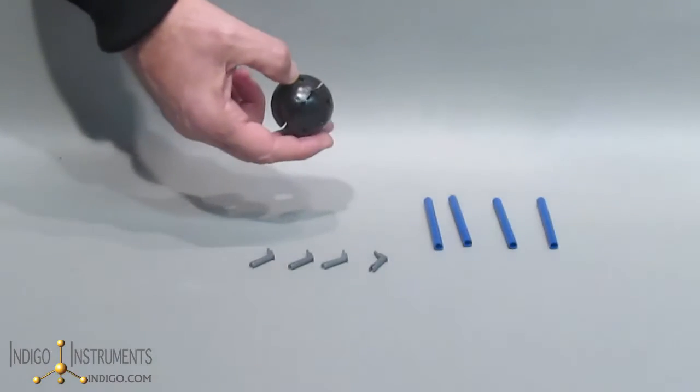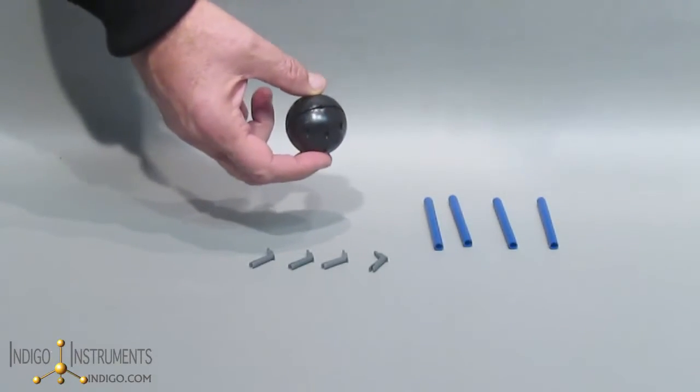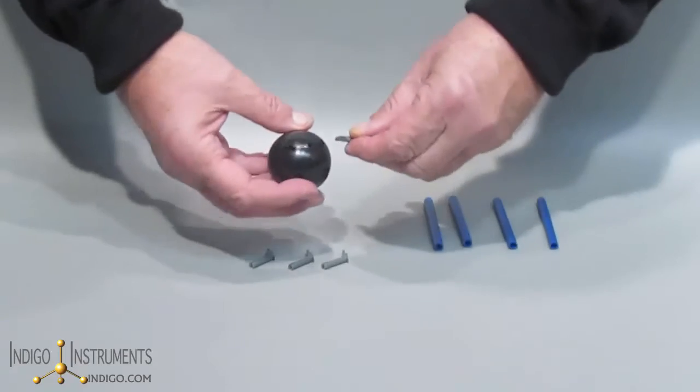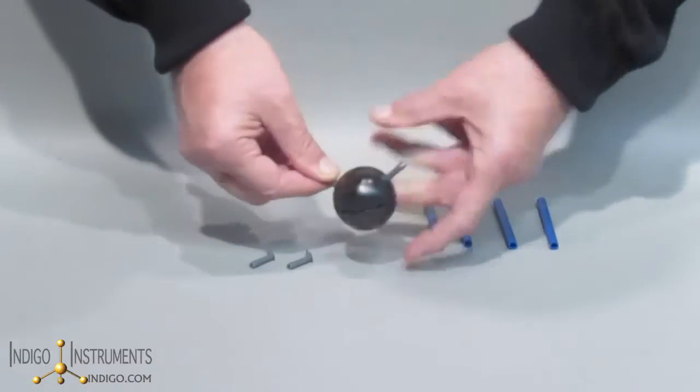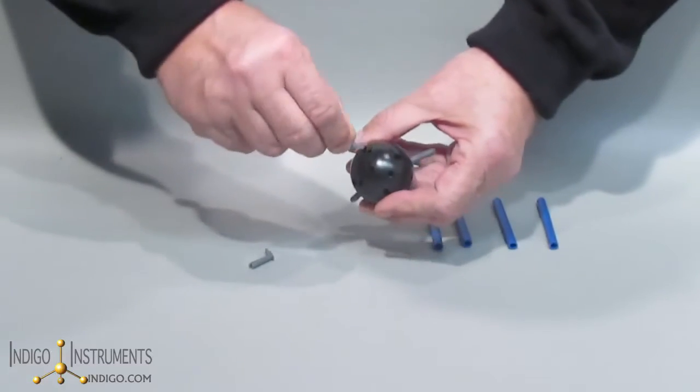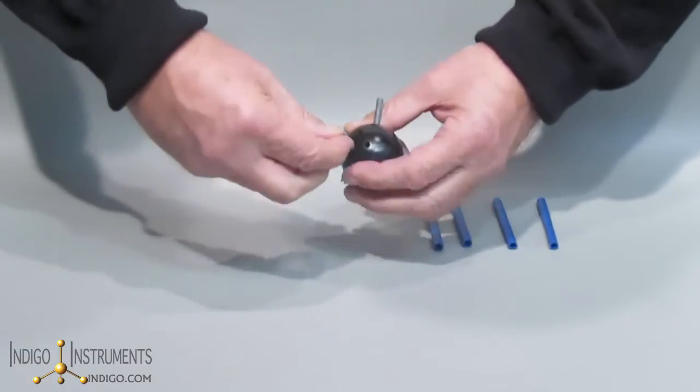To turn this basic unit atom into a tetrahedral atom, all you need to do is put in four of these angular pegs, two on the top, and then in the opposite positions on the bottom, add the other two.